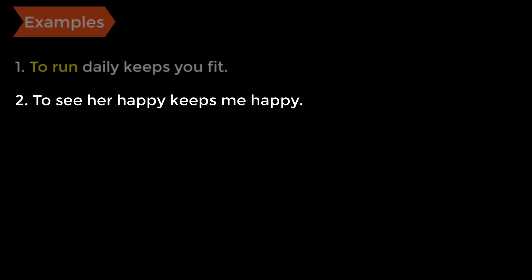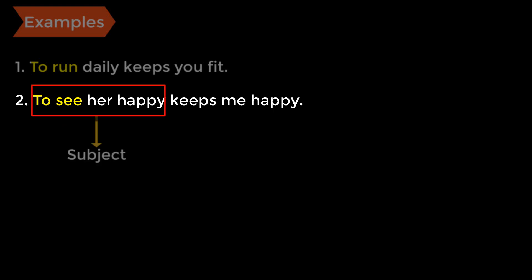'To see her happy keeps me happy.' Here 'to see' is the infinitive. Ask what keeps me happy — 'to see her happy.' So the subject of the sentence is 'to see her happy,' with 'to see' as the infinitive forming part of the subject. You could also say 'seeing her happy keeps me happy.'